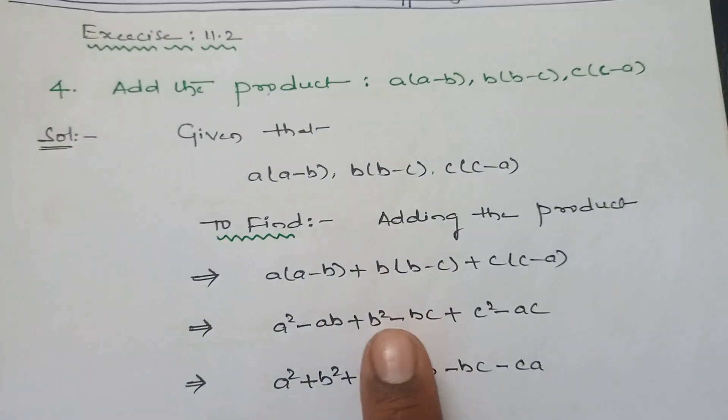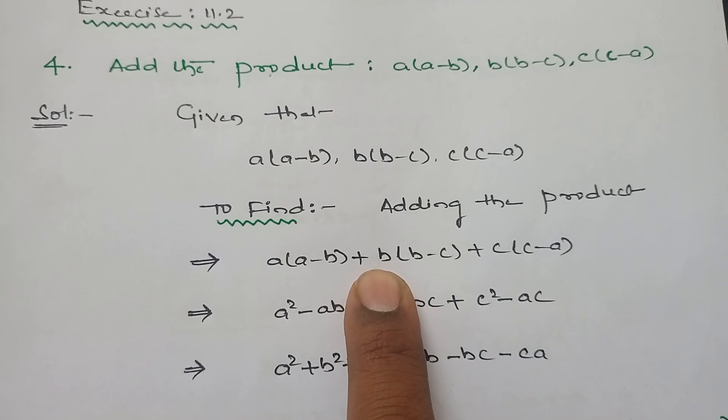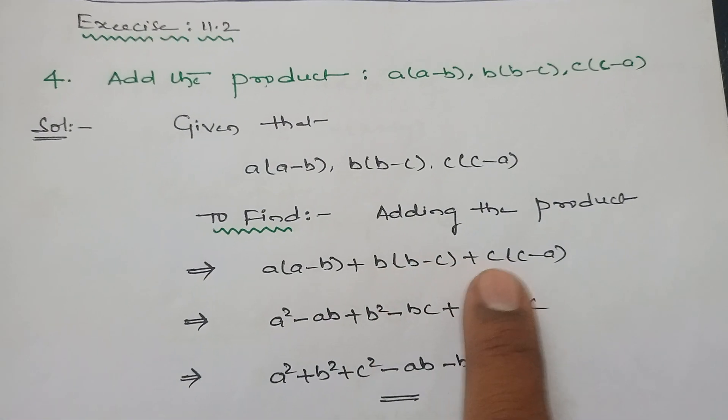So it becomes a(a-b) + b(b-c) + c(c-a). Now multiply and expand the products.